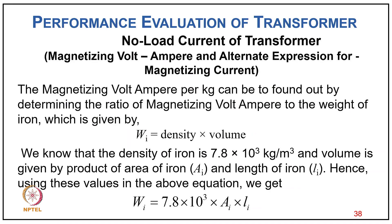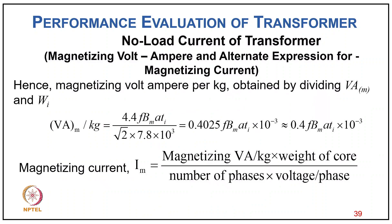The magnetizing volt-ampere per kg is found by dividing Vm by the weight of iron Wi = 7.8×10³ × Ai × Li. This gives magnetizing VA per kg = 4.44 × f × Bm × ati / (√2 × 7.8×10³) ≈ 0.4025 × f × Bm × ati × 10³, or approximately 0.4 × f × Bm × ati × 10³. The magnetizing current Im is then: (magnetizing VA per kg × weight of core) / (number of phases × voltage per phase).